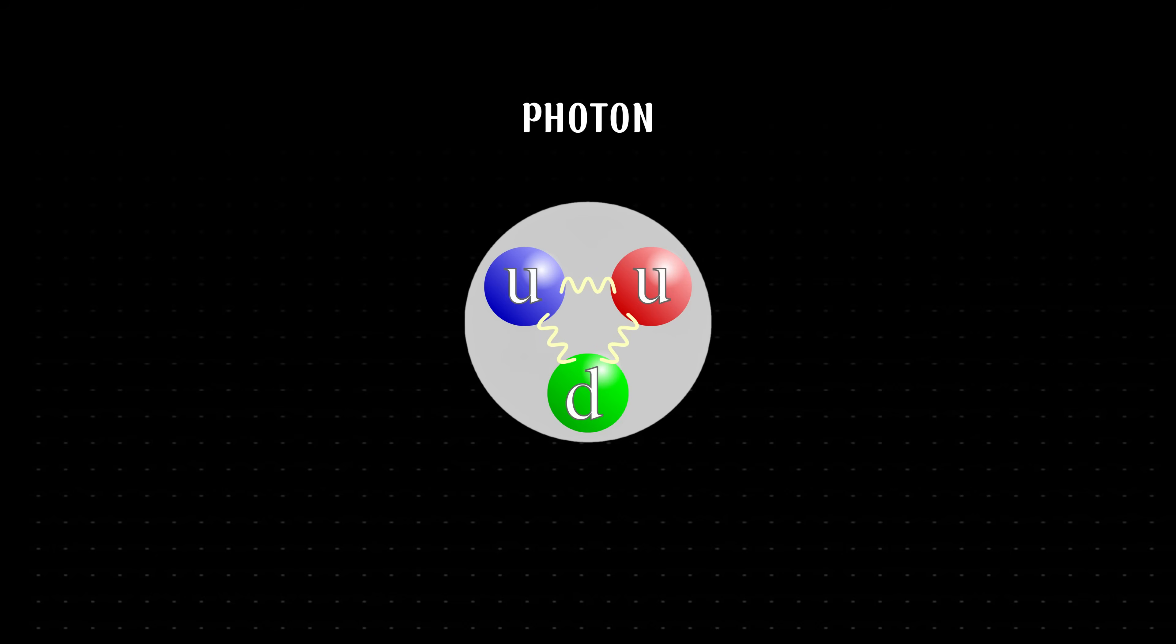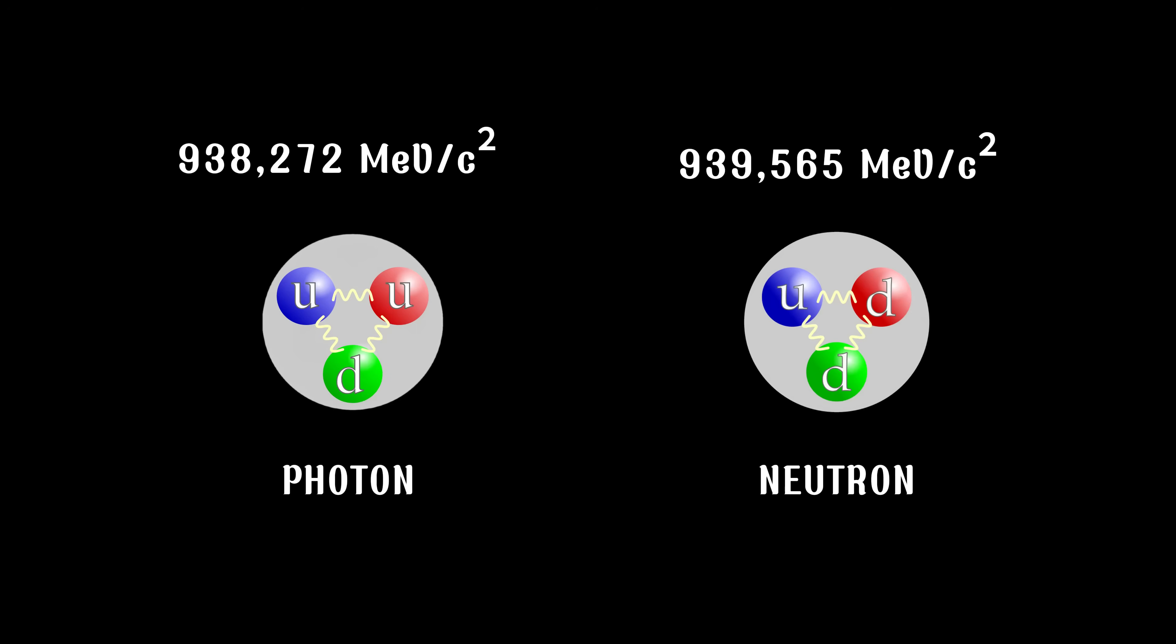During decay, one down quark transforms into an up quark, resulting in a configuration of two up quarks and one down quark, the structure of a proton. So, why is the neutron's configuration so unstable? The answer likely lies in mass and energy.